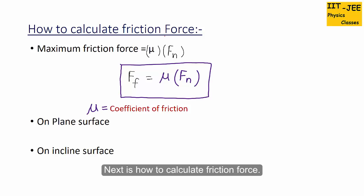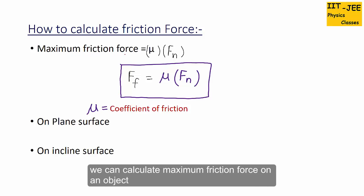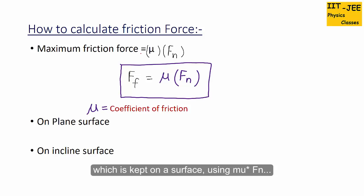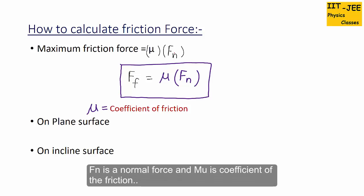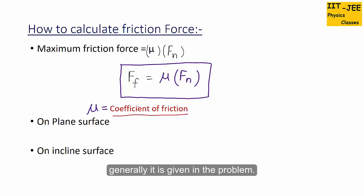Next is how to calculate friction force. We can calculate the maximum friction force on any object kept on a surface using the formula: FF = μ × Fn, where Fn is the normal force and μ (mu) is the coefficient of friction — a constant value for different surfaces, generally given in the problem.